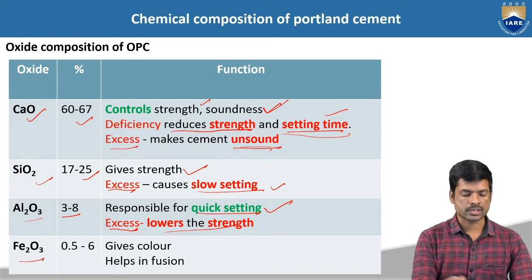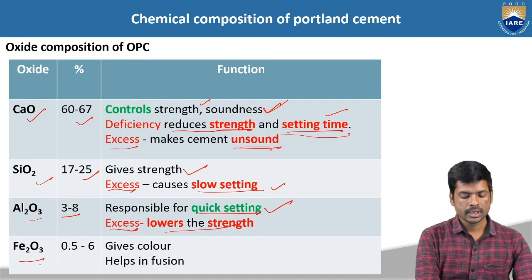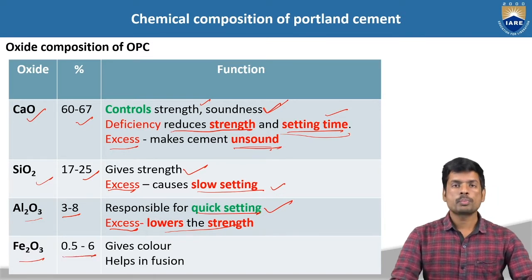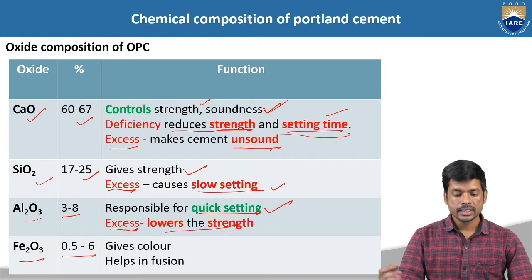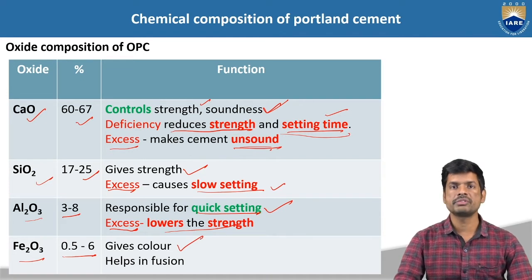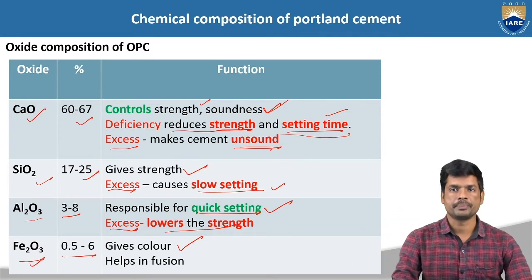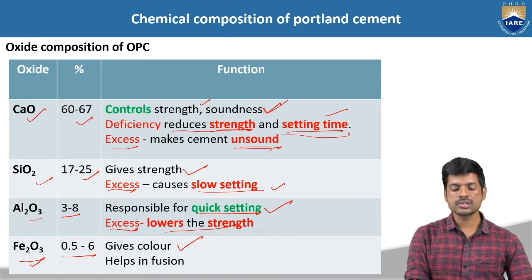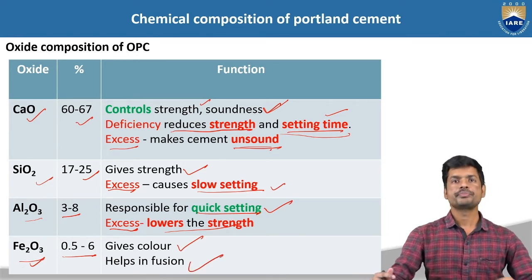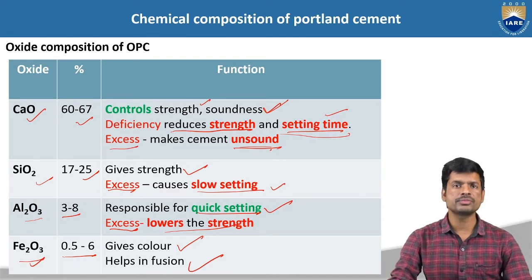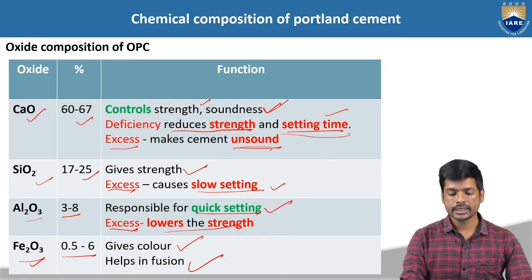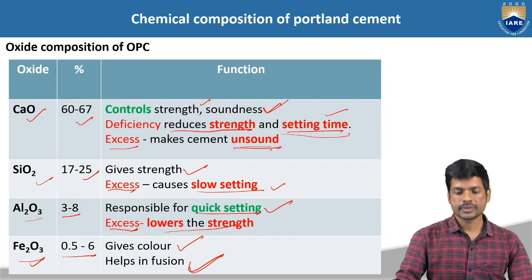The next material is ferrous oxide, Fe2O3. The percentage of ferrous oxide is 0.5 to 6%. Due to addition of this particular ferrous oxide, the color will be changed — whatever the color we are getting for cement, that is gray color, will be affected with the addition of ferrous oxide. And it helps in fusion — fusion is nothing but the burning process. If you add the correct amount of ferrous oxide, the burning process of chemical manufacturing will be done smoothly.